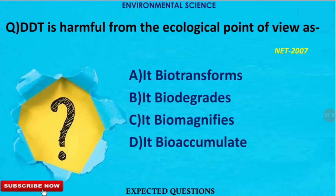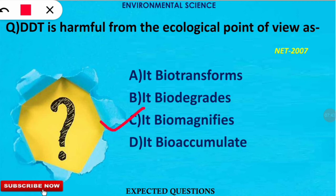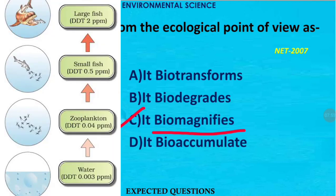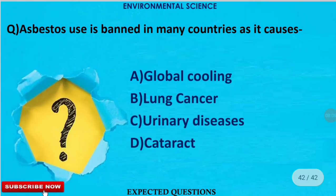The next question: DDT, a pesticide, is harmful from an ecological point of view because — the correct option is C — it biomagnifies. Biomagnification means the concentration increases from one trophic level to the next.